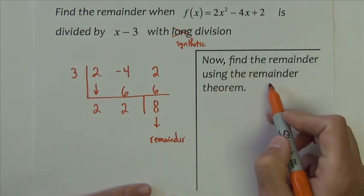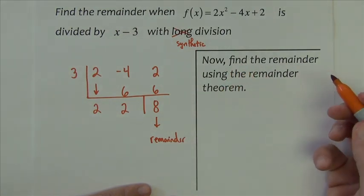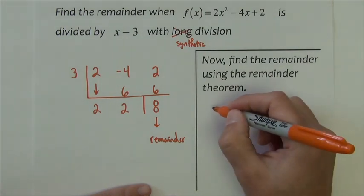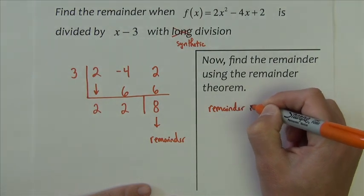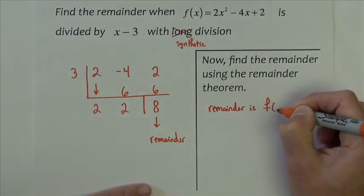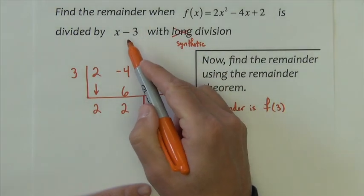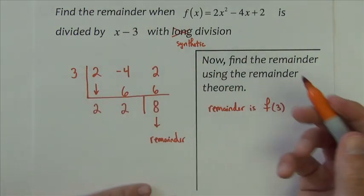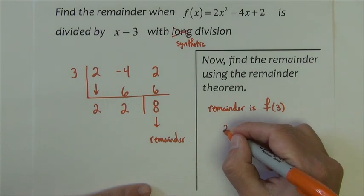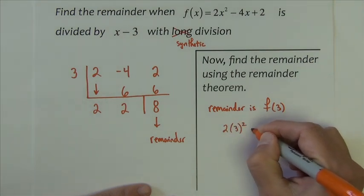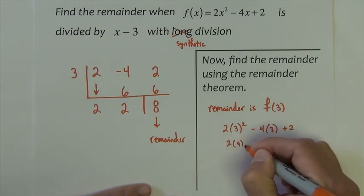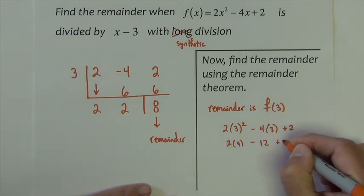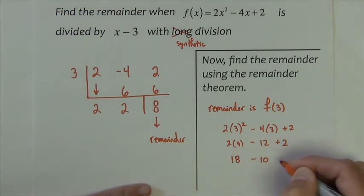So now find the remainder using the remainder theorem. Well, the remainder theorem tells us, again, that the remainder is precisely f of the zero, what we chose right here. So if I were to find f of 3, that's 2 times 3 squared minus 4 times 3 plus 2, that's 2 times 9 minus 12 plus 2, 18 minus 10, which is 8.